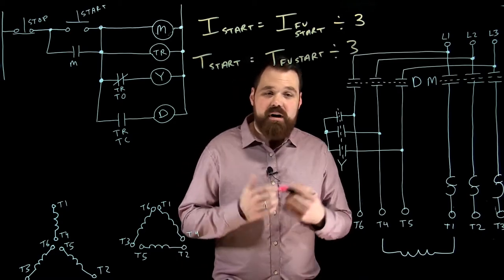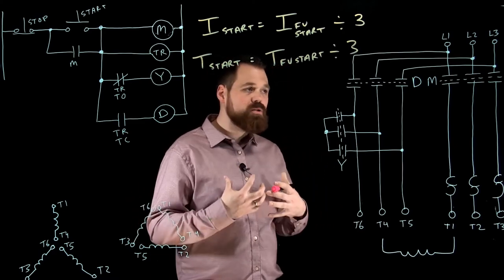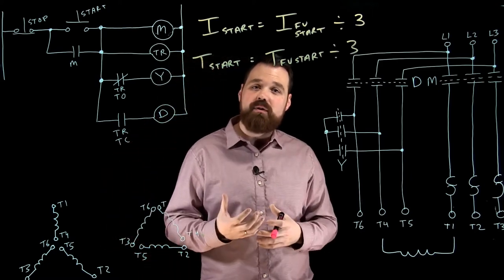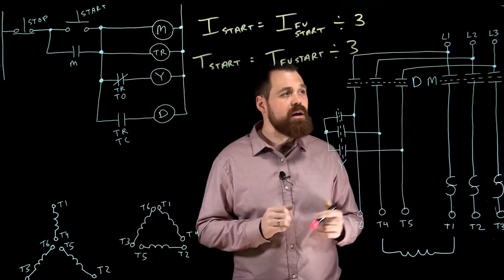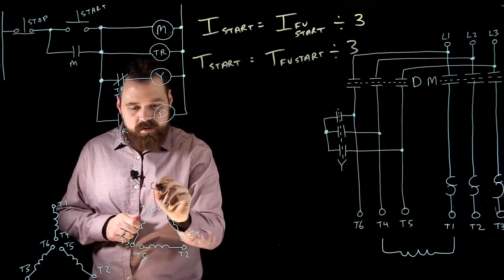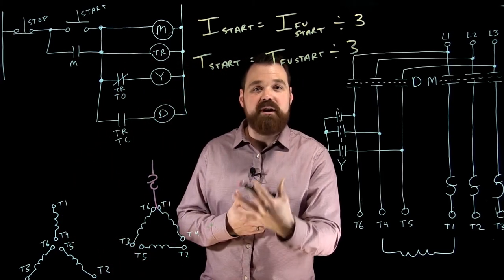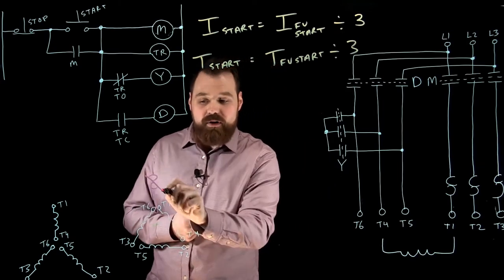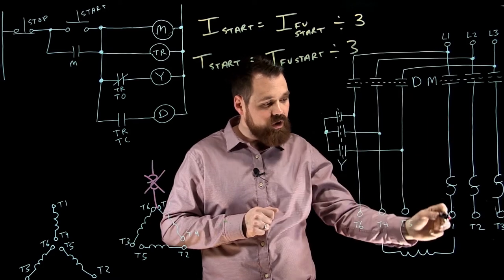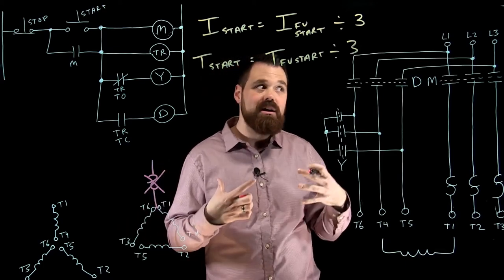The last thing I want to talk about is very different and important with a Y-delta starter. It has to do with where those overloads are located. When we think about this, when I was running in delta, because we only care about the overloads when our motor is actually running, we know normally in delta, if we were to have an overload in the line, it would see line current, which is what the nameplate value is. However, in this case, our overloads only see the current that's going to flow through one phase at a time, not splitting off and going into two.